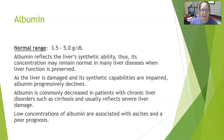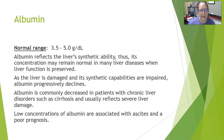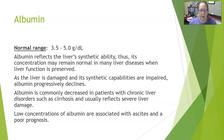The concentration of albumin can remain normal in many liver diseases as long as liver function is preserved. The liver has the capacity to renew and heal itself, and the body will try to preserve liver function for as long as possible. But as the liver is damaged and synthetic capabilities are impaired, albumin will progressively decline. It is commonly decreased in patients with chronic liver disorders such as cirrhosis, and it usually reflects severe liver damage.